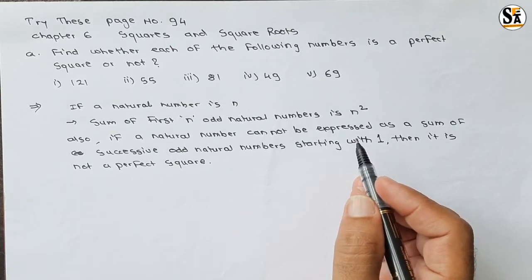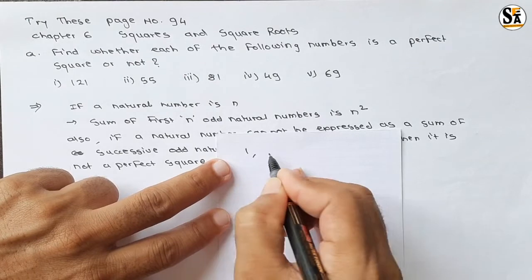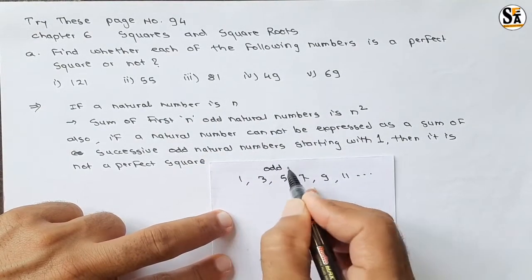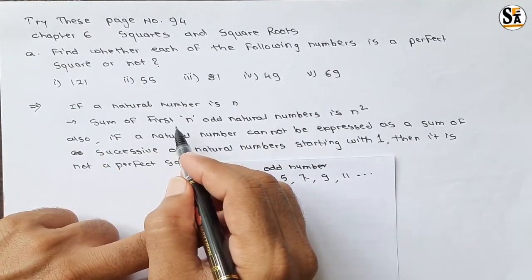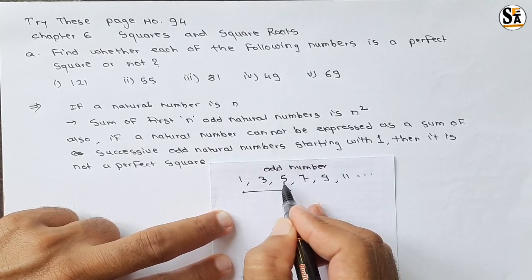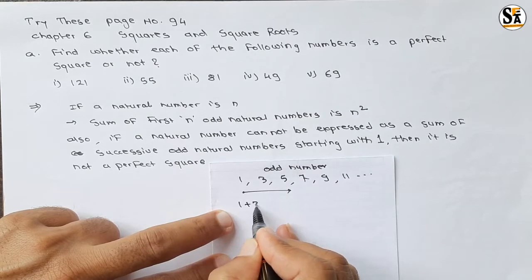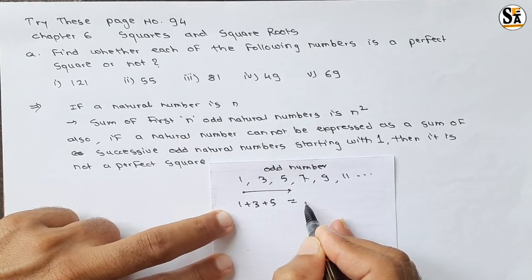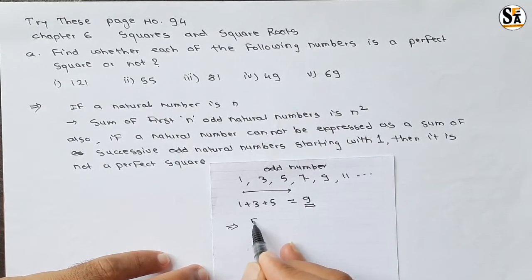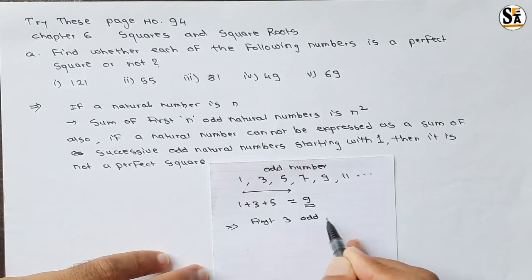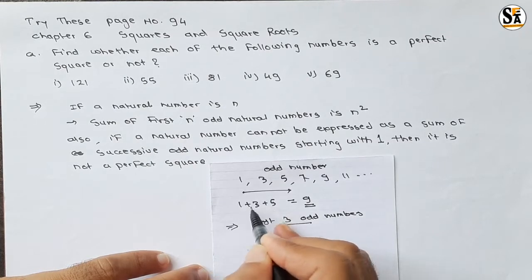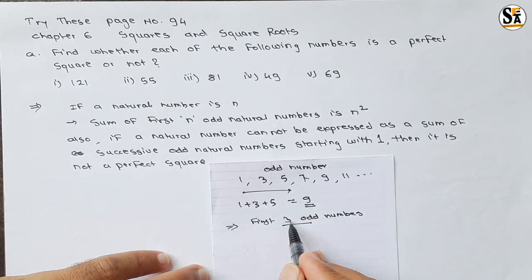The odd numbers start with 1, 3, 5, 7, 9, 11, and so on. The statement says: if we take the first three odd numbers — 1, 3, 5 — and add them: 1 plus 3 plus 5, we get 9. We have added the first three odd numbers starting with 1, so the summation equals n squared. Here n is 3, so the summation is 3 squared, which is 9.